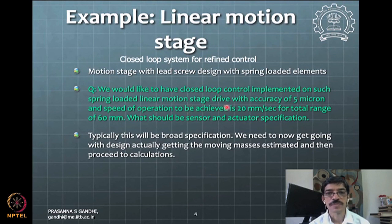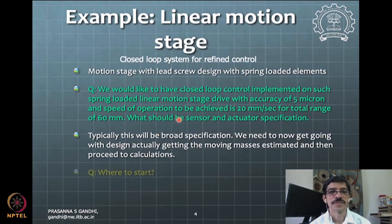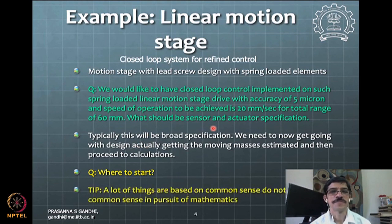For actuator specifications, you need to think about some dynamics — what are the moving masses in the system and similar quantities. I'll give a broad outline of the process. This is largely common sense: if you think it through systematically, things fall into place. Suppose you are given these specifications and want to get to sensor and actuator specifications.